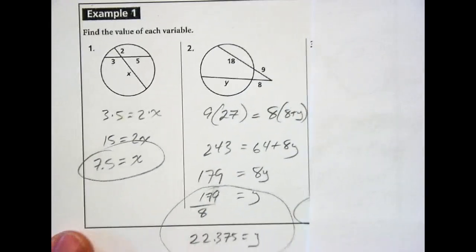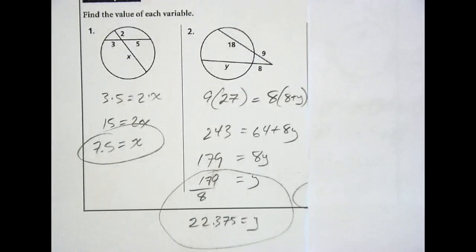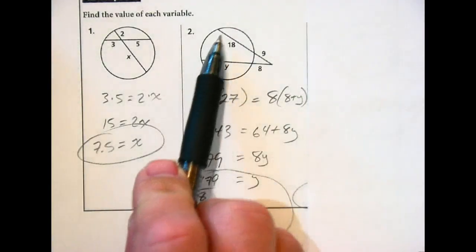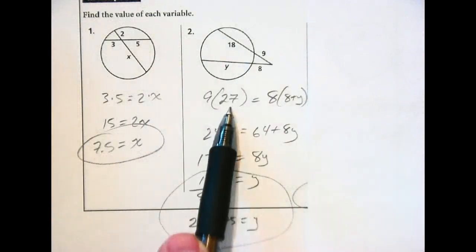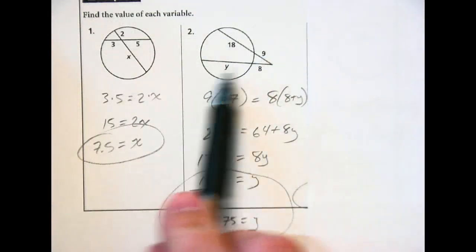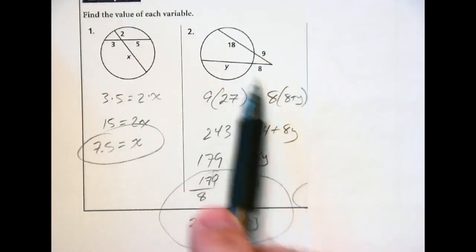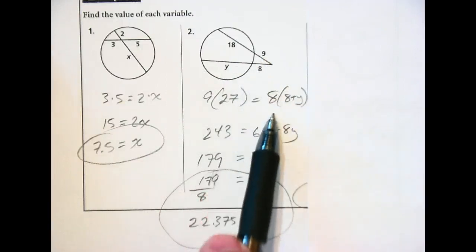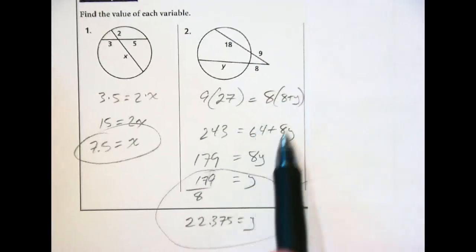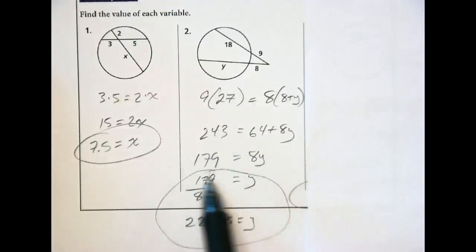Here is number two — check your work. Notice on this one: I took the whole length, 18 plus 9 is 27, multiplied by 9. This whole length is 8 plus y, multiplied by the external 8. Distribute that 8, subtract 64, and divide by 8 to get 179/8.